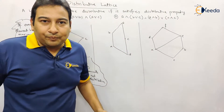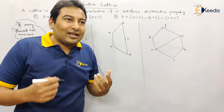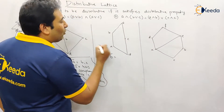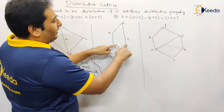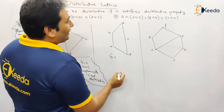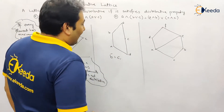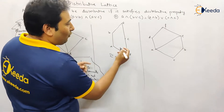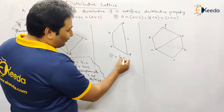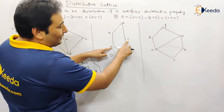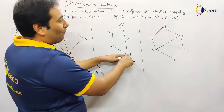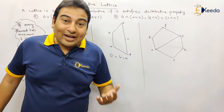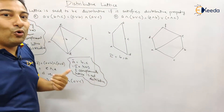Now let us check the second lattice. To check it, let us find the complement of any element and see if any element has more than one complement. What are the complements of b? b and c: least upper bound is e and greatest lower bound is d, that means b complement is c. Also, c and a: least upper bound is e and greatest lower bound is d, so c has two complements. Therefore it's not a distributive lattice.